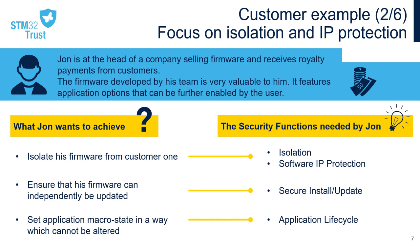Second example: John is at the head of a company selling firmware IP that provides specific features and receives royalty payments from its customers. The firmware developed by his team is very valuable and features configuration options that can be further enabled by the user. To secure his business, John needs to isolate and protect his firmware IP from customer ones so that it can't be extracted and copied. He also needs to ensure that he can securely update his firmware IP independently of the customer one. And finally, as his firmware provides configuration options, he wants to make sure those options can't be enabled by customers without related payments, so he needs to define unchangeable application states to securely protect and lock these options.